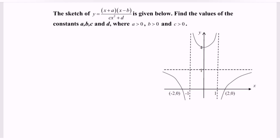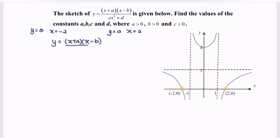So first, what we have to do is to find the x-intercept. Kindly refer to the graph — we have the x-intercept when y equals zero, the value of x is equals to negative two. And when y equals to zero, x is equals to two. So kindly substitute this into the function where we have y equals to x plus a, multiplied by x minus b, over cx squared plus d.